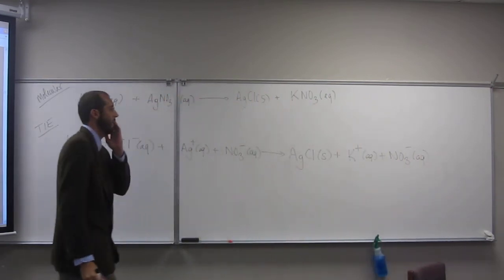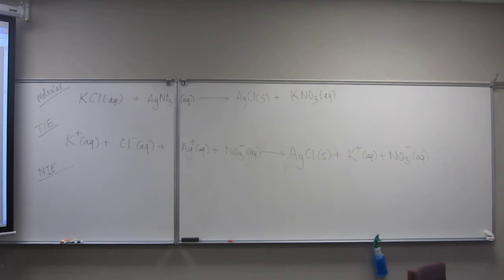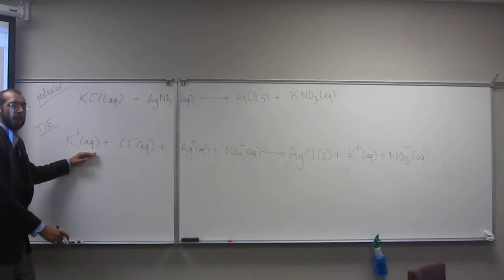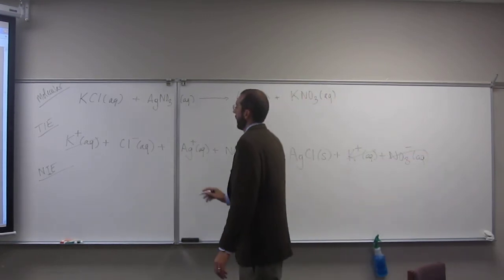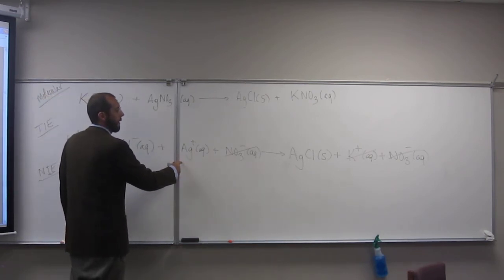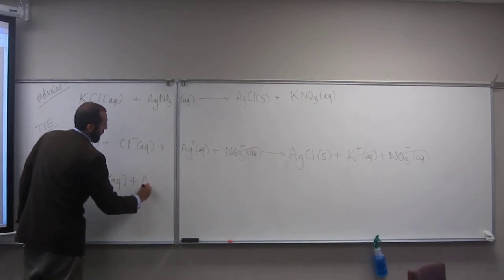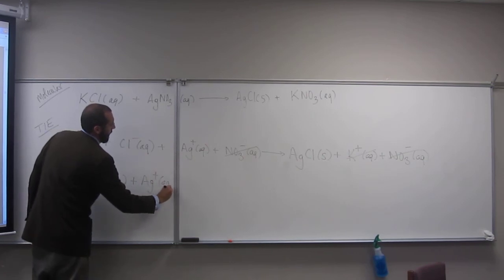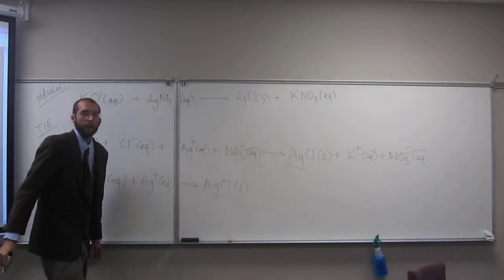And then what do we do? How do we do the net ionic equation? Anything that's on both sides, right? You're canceling it. So K plus on both sides? Yes. NO3 minus, is that on both sides? Yes. What about Cl minus? No. What about Ag plus? That's the net ionic equation.